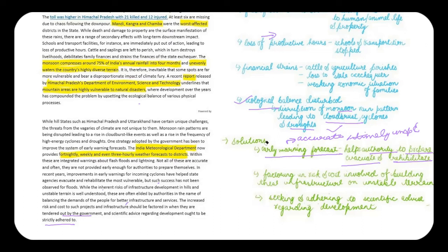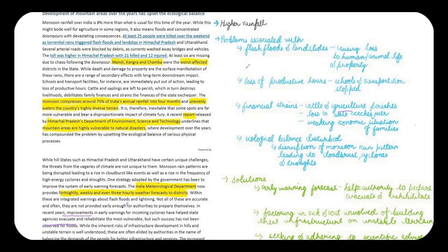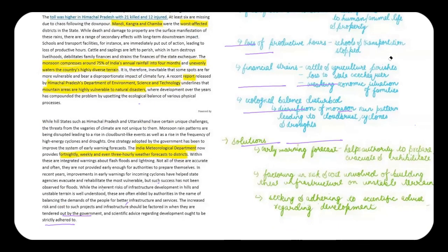To summarize, this editorial discusses the problems and solutions related to infrastructural development in hilly areas. The four problems are: flash floods and landslides, loss of productive hours, financial strain with agriculture perishing, and ecological balance being disturbed. The three solutions are: early warning forecast systems, factoring in risk and cost of infrastructure projects, and adhering to scientific advice. Thank you — I hope you liked this video. Stay tuned for more such videos and have a nice day.